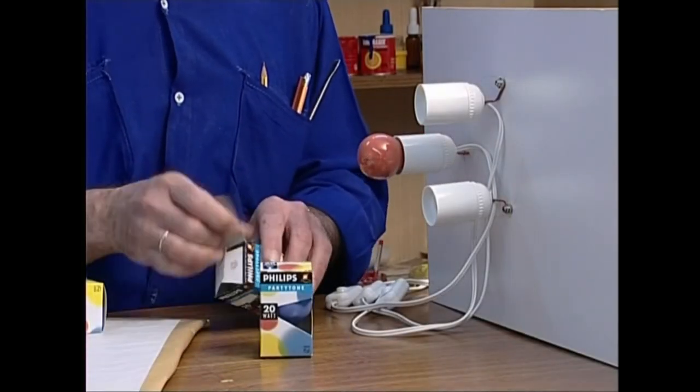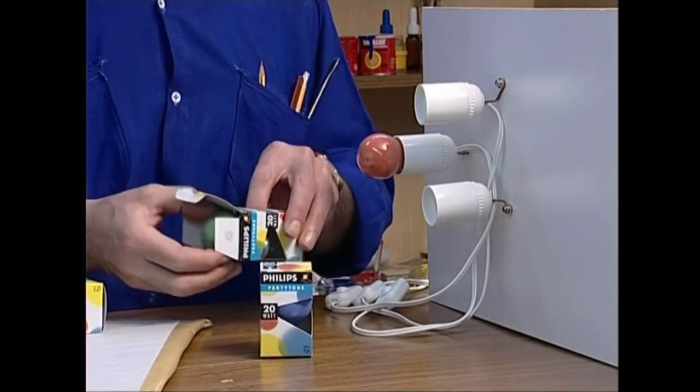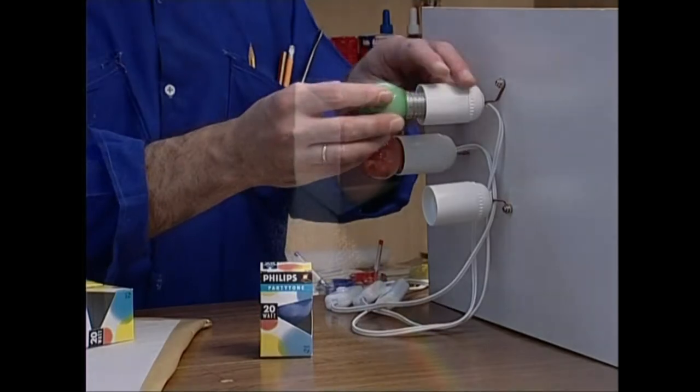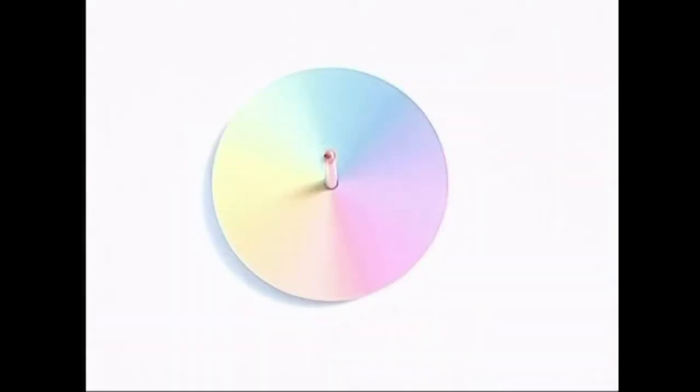Bai fizikariek, bai ikuskizunetako argiketariek koloretako argiekin lan egiten dute. Guk jakin badakigu argizuriaren izpibat banatzen badugu eguzkiaren espektroa lortuko dugula. Eguzkiaren espektroa osatzen duten koloreak modu egokian nahastuz, berriro kolore zuria lortuko dugula ere badakigu. Newtonen diskoarekin egiaztatu genuen.